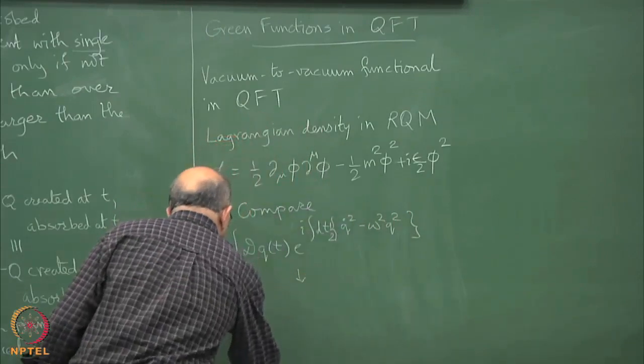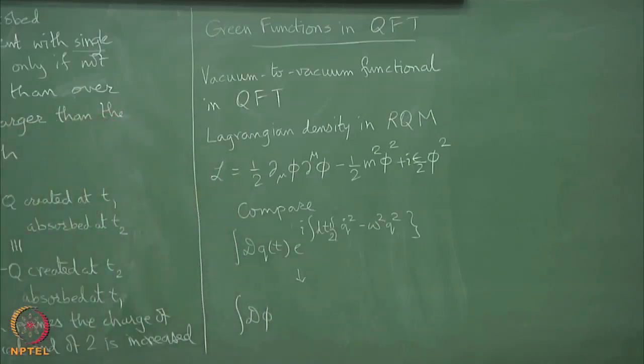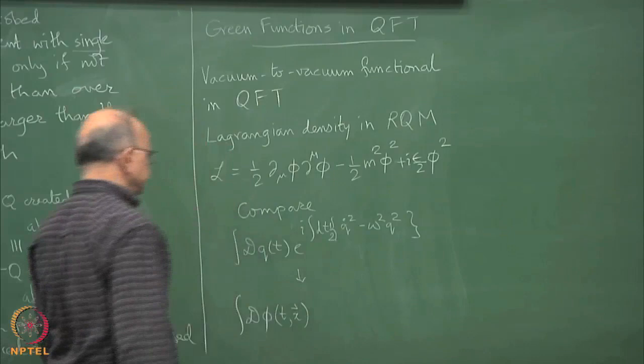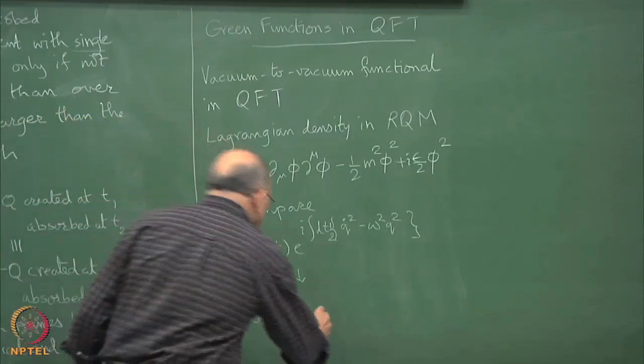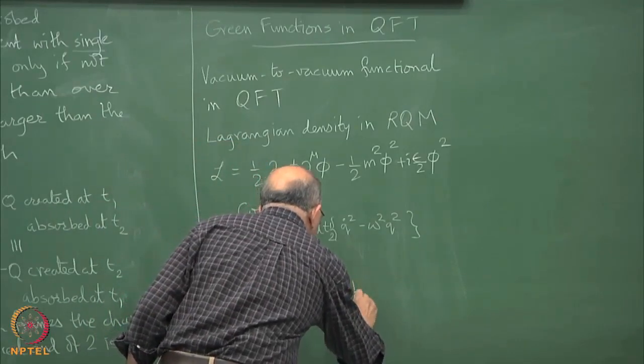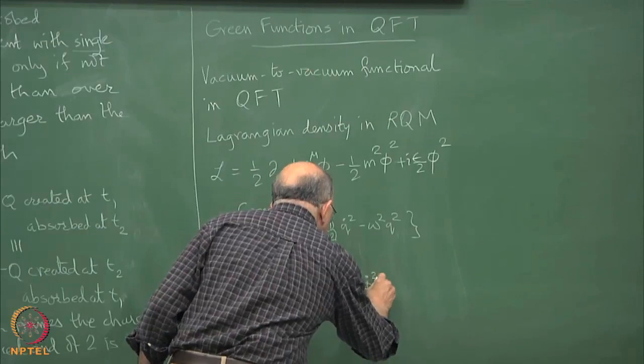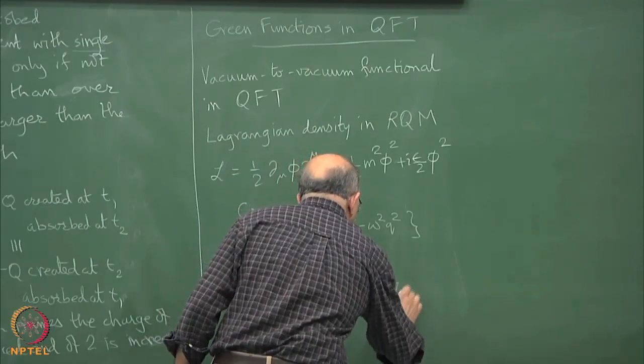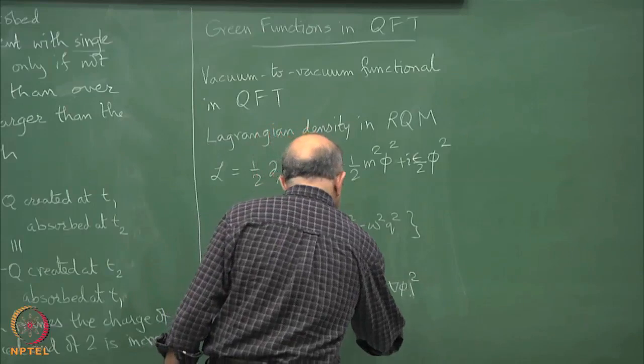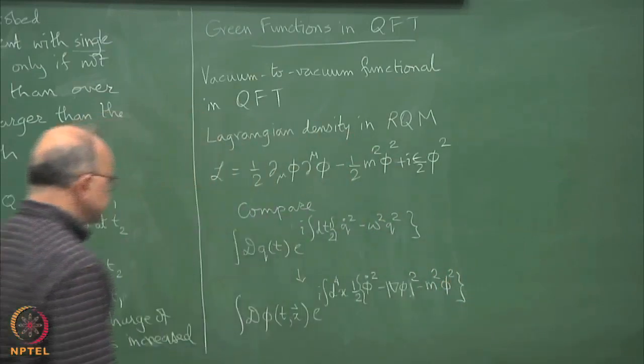From this we are going to integral d, the configuration space variable I call phi but then put t x1 x2 x3 and do an e raise to i and now I do a d4x and now I do phi dot square minus gradient phi square minus m square phi square.